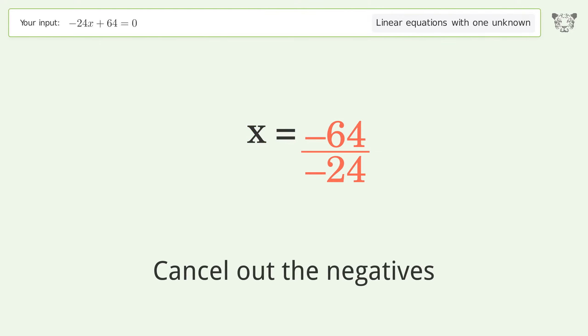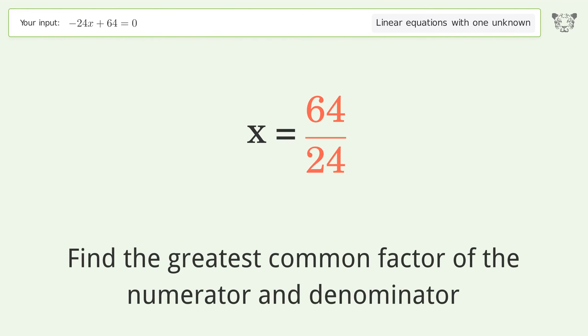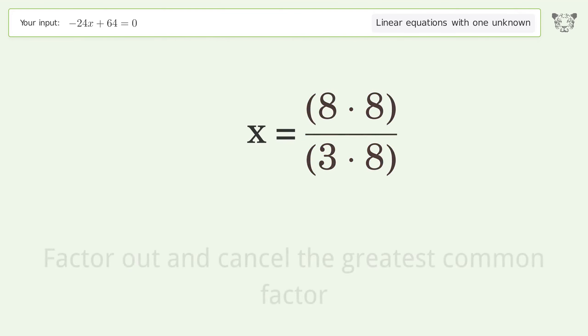Cancel out the negatives. Find the greatest common factor of the numerator and denominator. Factor out and cancel the greatest common factor.